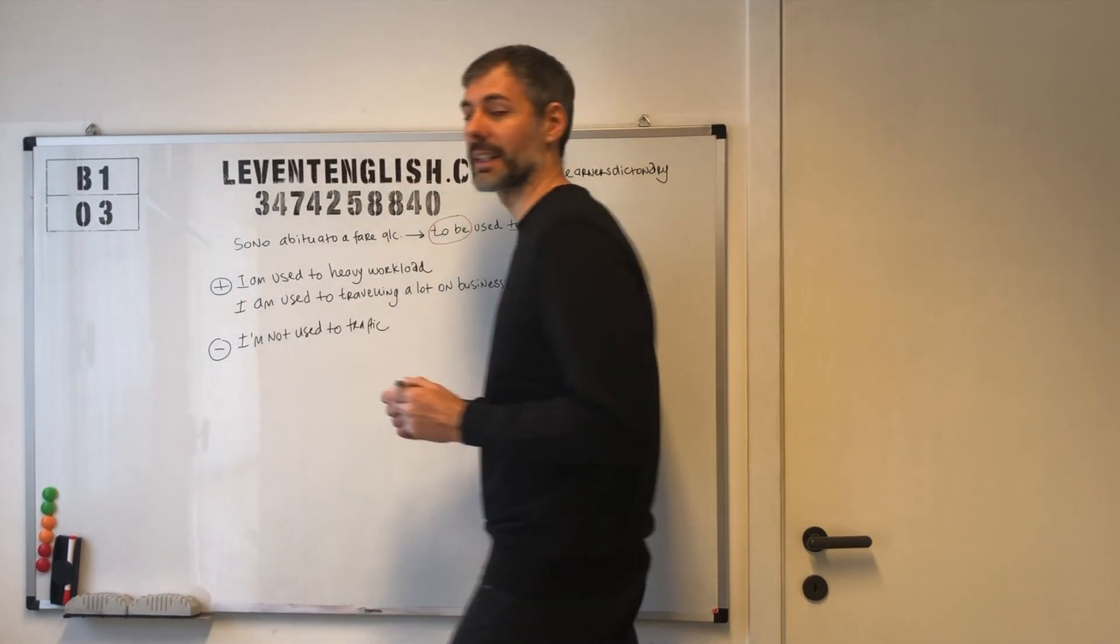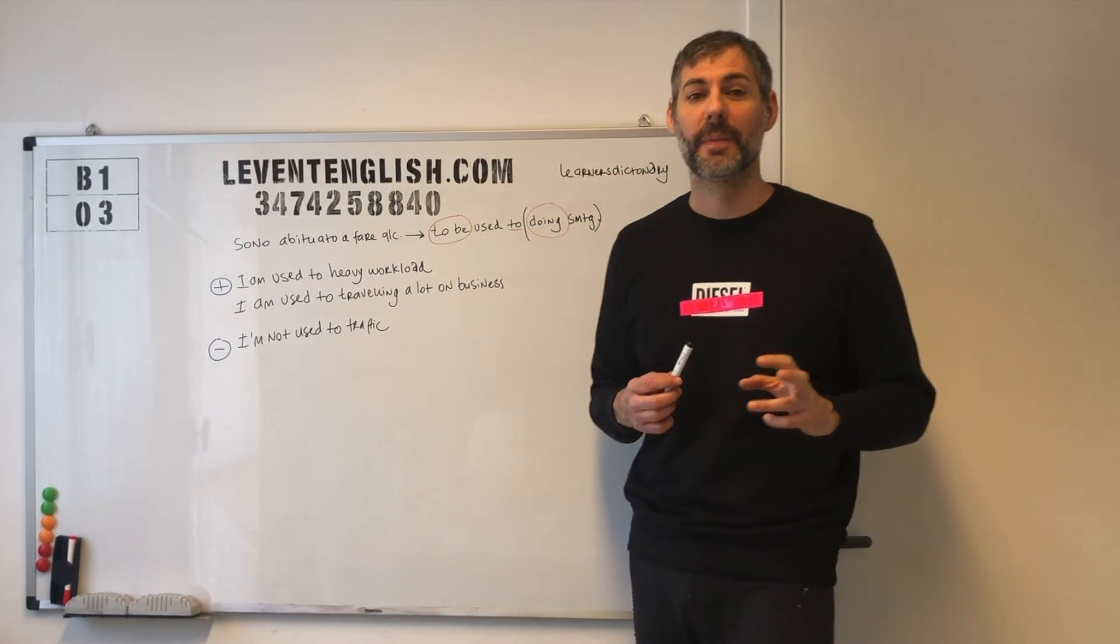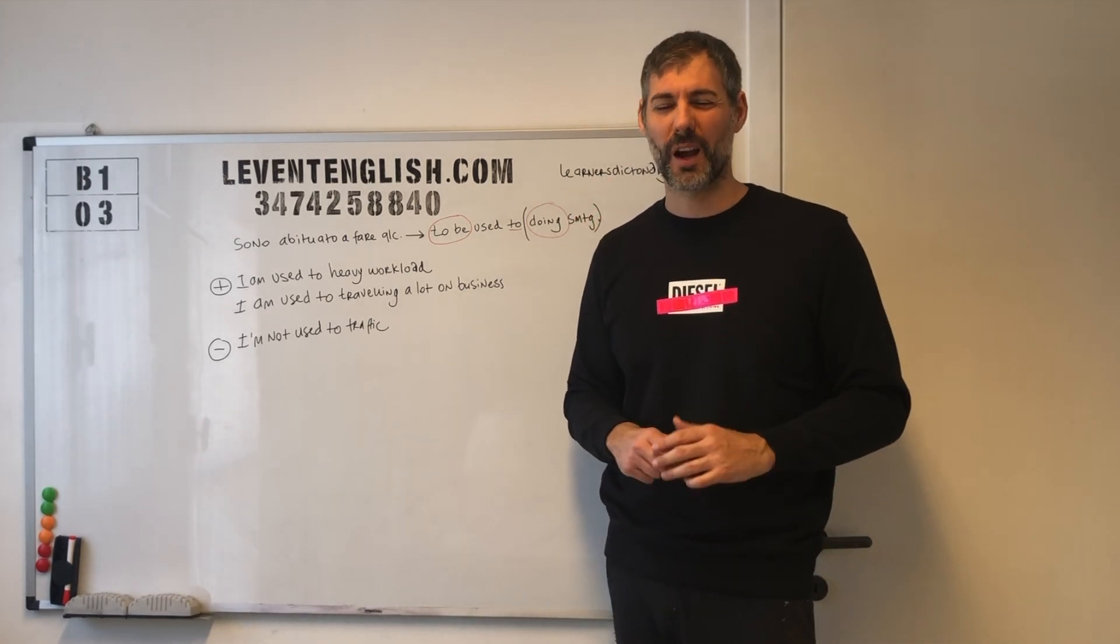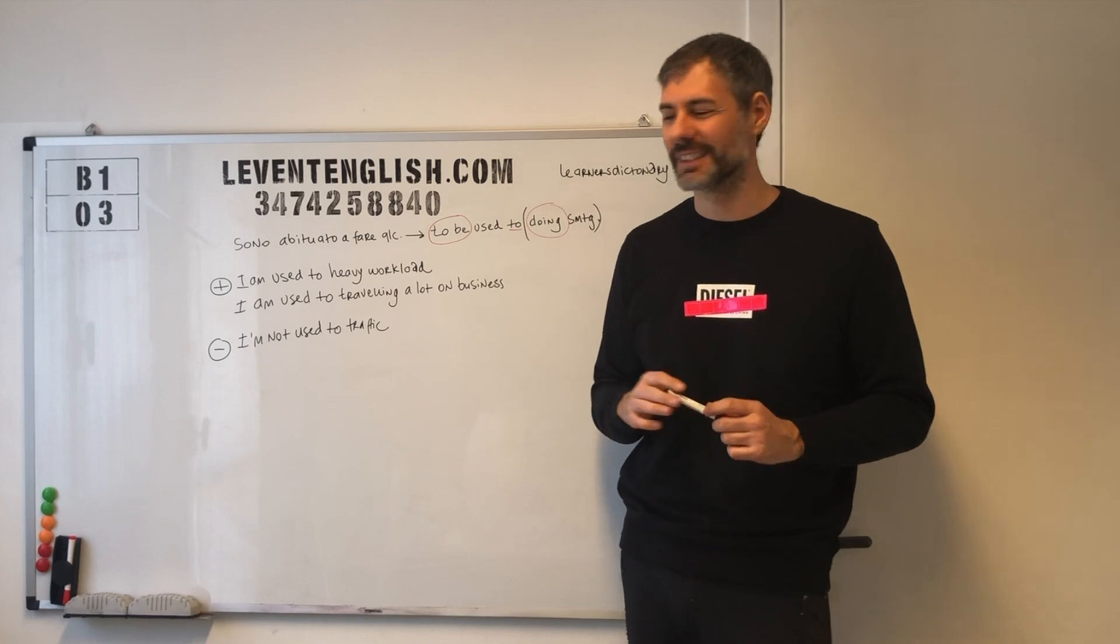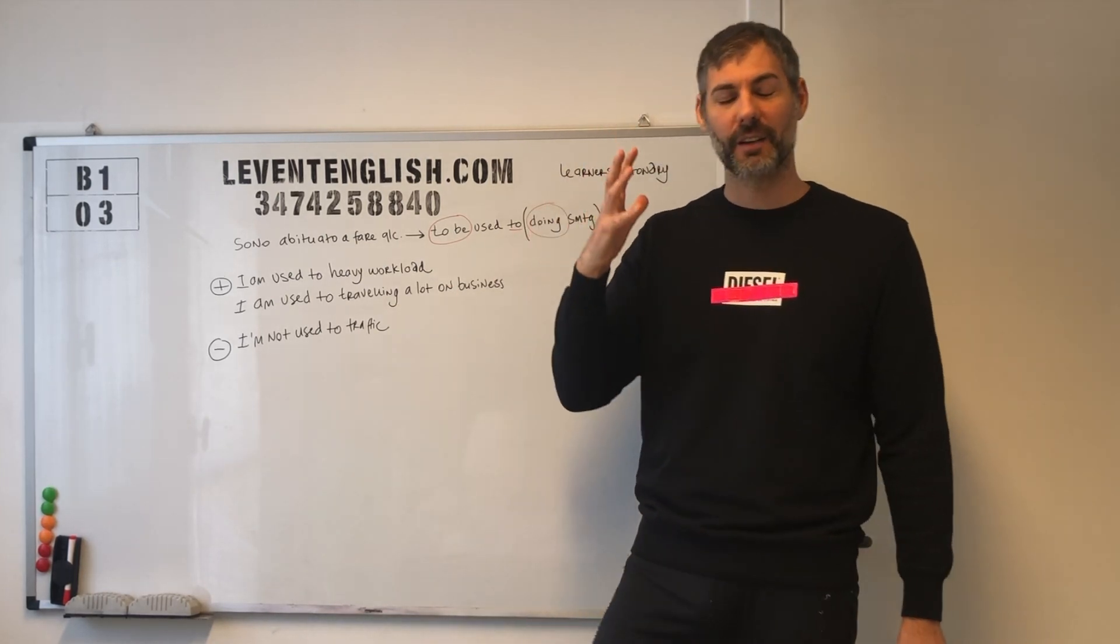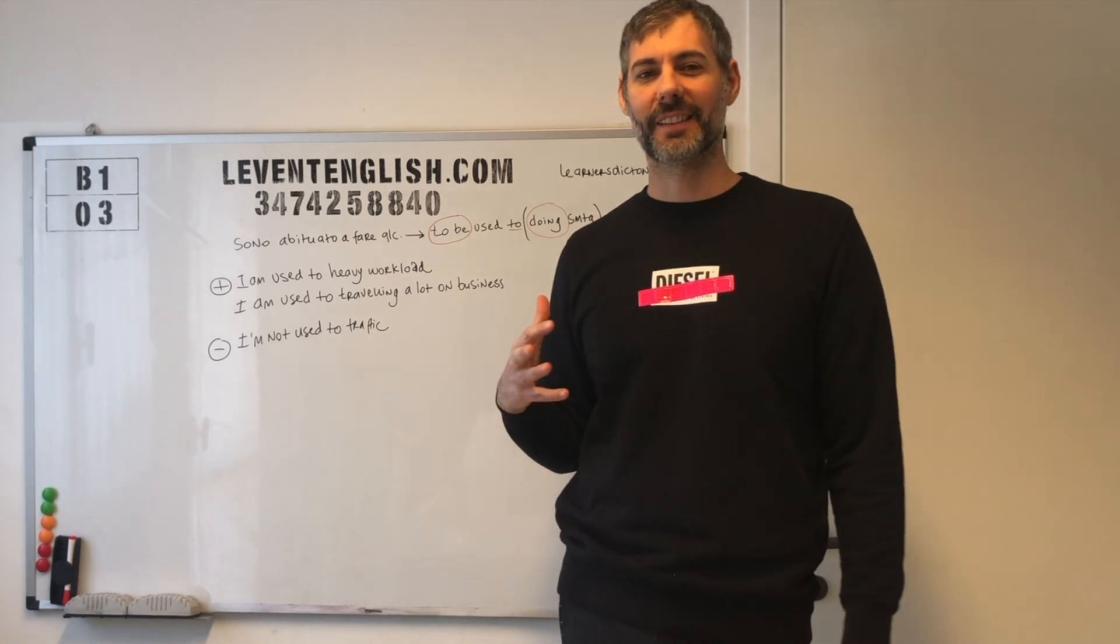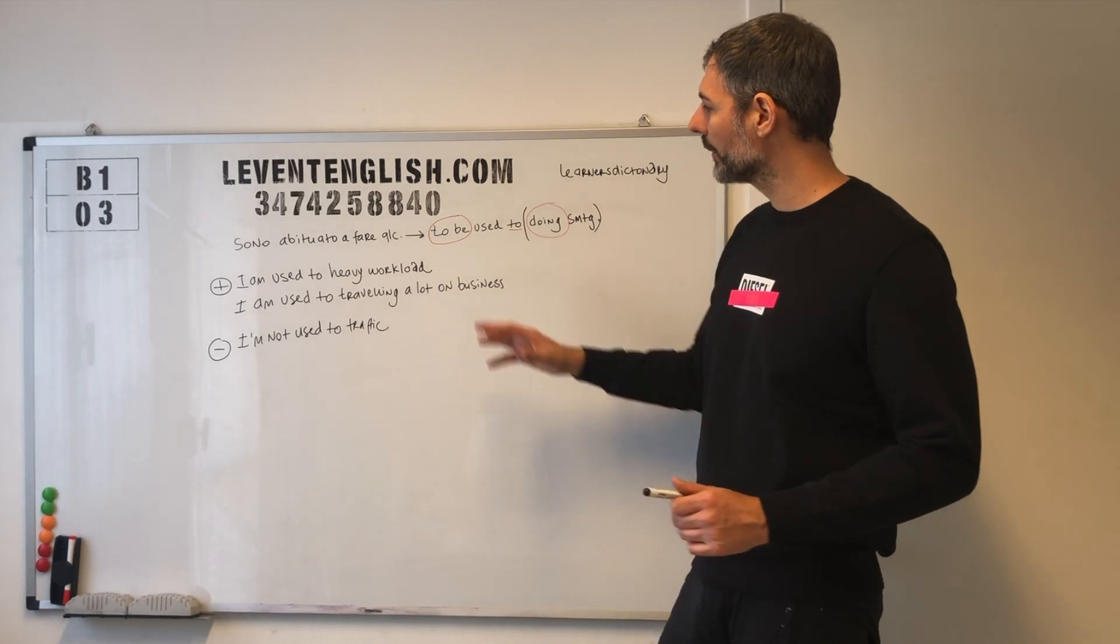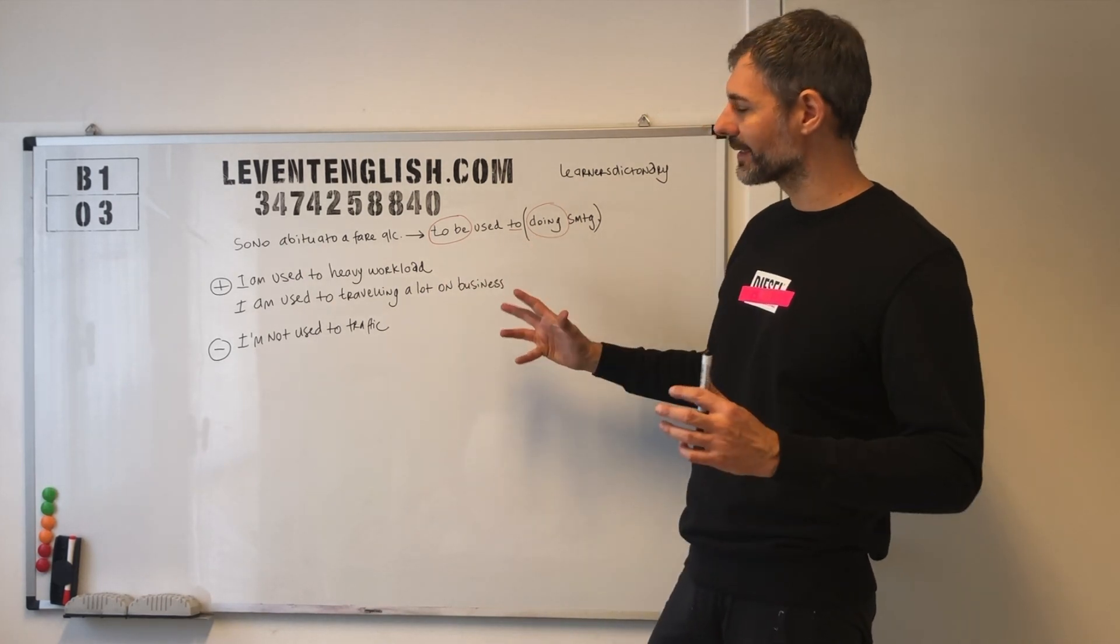Se la forma affermativa è I am, la forma negativa sarà I am not. Quindi, I'm not used to traffic. Per esempio, una persona che si sposta da una piccola città a una grande città dice Well, I like London, but I'm not used to traffic. It's driving me crazy. Non sono abituato al traffico. Mi sta mandando fuori di testa.